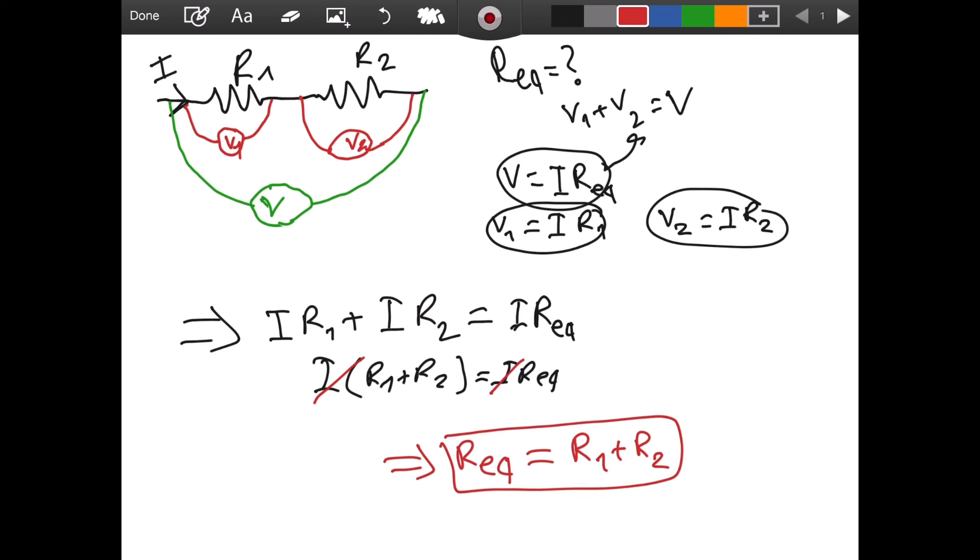So R_eq is equal to R1 plus R2. Notice that R1 and R2 are in series, so if they were to be in parallel, we would not be able to use this formula. And there is another formula for that. I will be deriving that formula as well in another video.